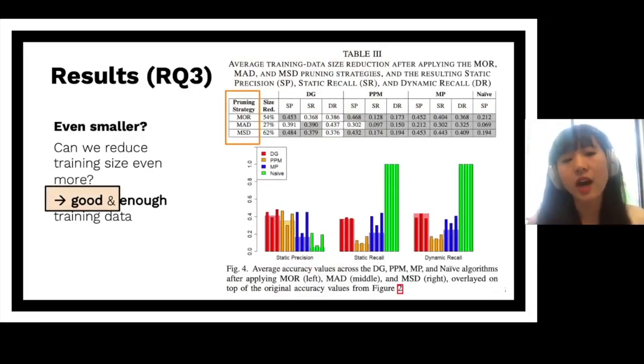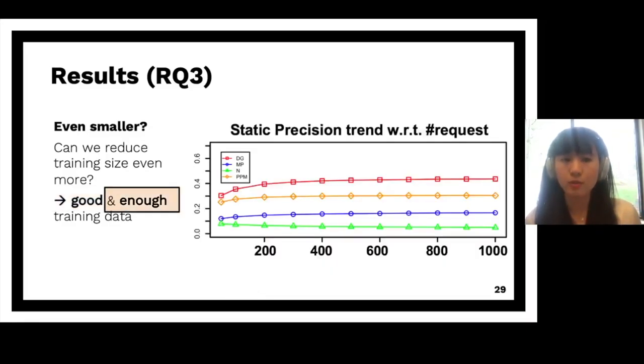So for RQ3, in order to select the good training data, we developed three data pruning strategies. I won't go into the details, but basically the results and the discussions are all in the paper. And we found that they are very promising because they can significantly reduce the training data size and they don't harm the accuracy that much. So today I'll focus more on how do we select enough training data.